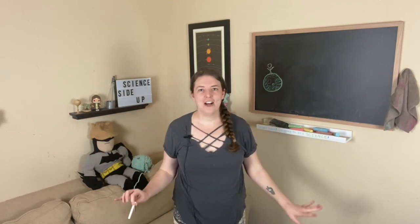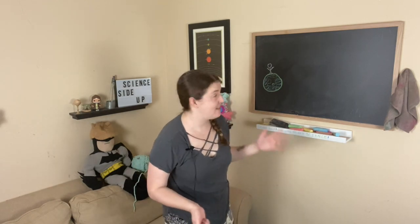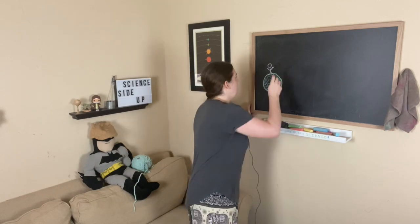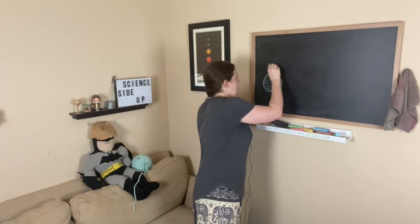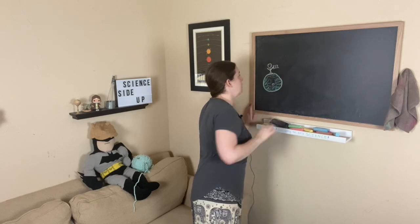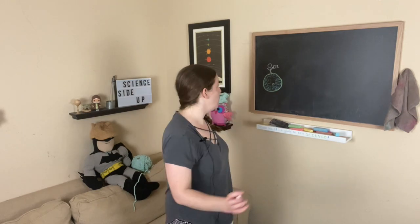We're not going to worry about how this is a thought experiment. And then we're also going to imagine that he has like a perfect telescope. So maybe we'll give him a camera because I can draw a box with a circle in it, which is a camera now. Okay.